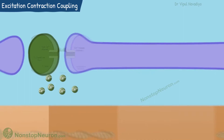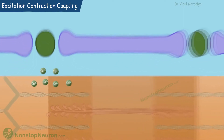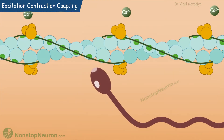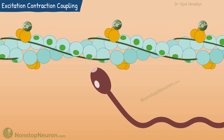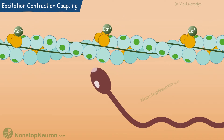Now the calcium spreads into the sarcomere. At present, the tropomyosin molecule is covering the binding site on actin molecules, so myosin is not able to bind to actin. The calcium that has just entered binds with troponin. This binding causes conformational changes that displace the tropomyosin into the groove between the two strands of actin molecules. The myosin binding site on actin is now uncovered.